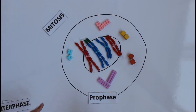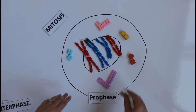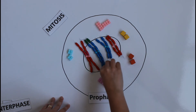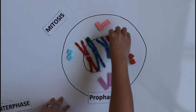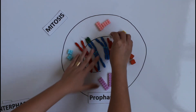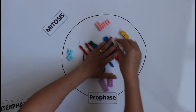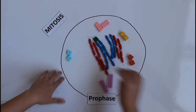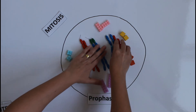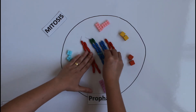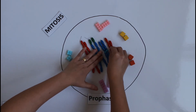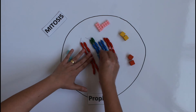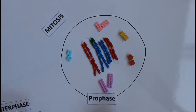Another very important thing that happens in prophase is that the nuclear membrane disappears. So now the nuclear membrane is gone and the chromosomes are organized — my DNA is condensed.